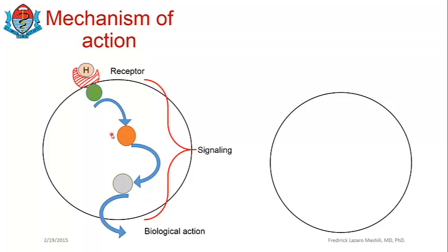Because this happens within the cell, it is called intracellular signaling. We are going to get into the details later, but basically you have a hormone-receptor complex, an activated receptor activates an intracellular molecule, that in turn activates another, and there is a series of activations within the cell — eventually you have a biological action. These events are what is called signaling.